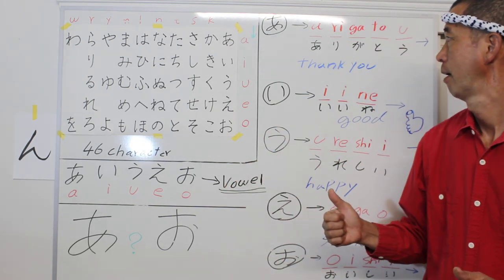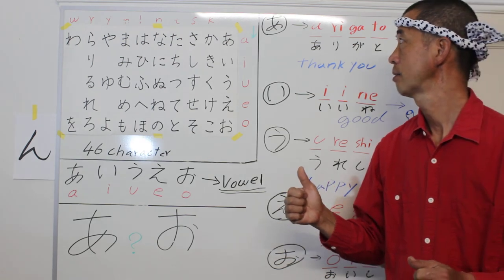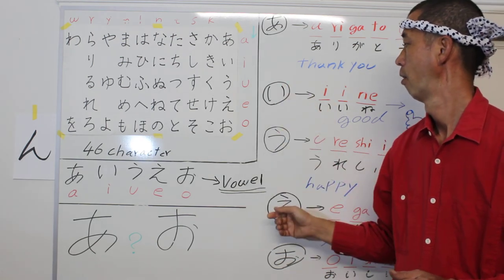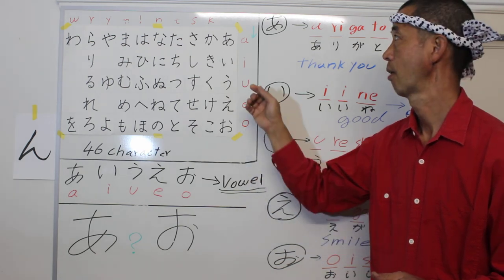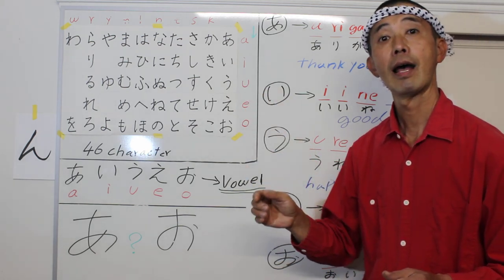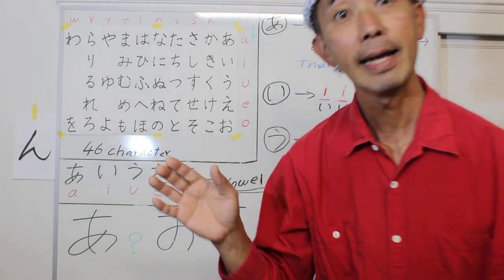Okay. Today this is AIUEO. Next lesson is kakikukeko. See you next time. Bye!